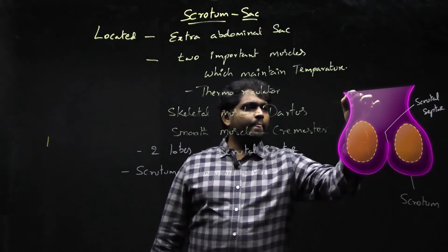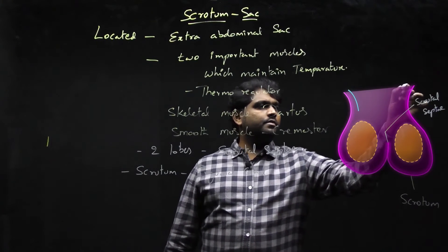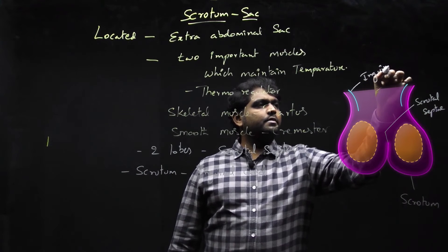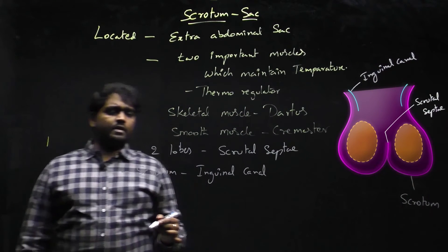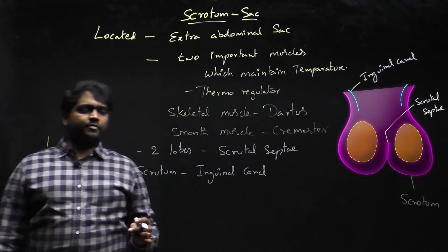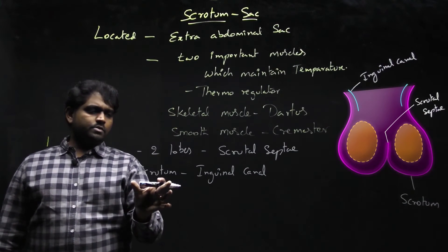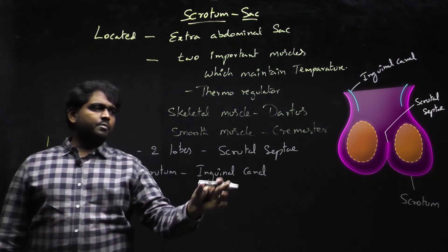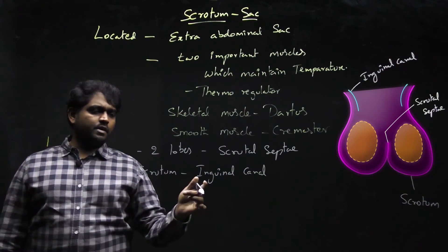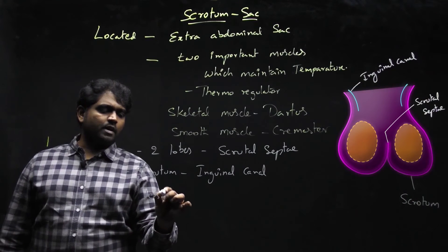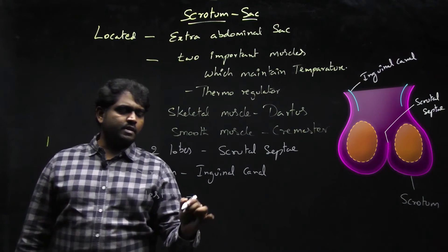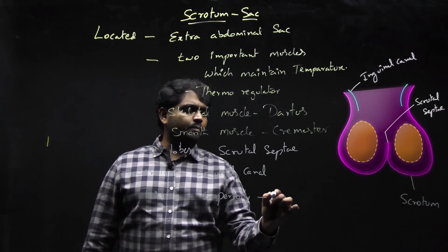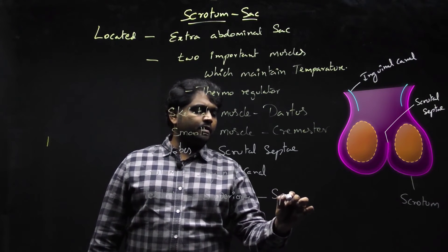This is the inguinal canal by which the scrotum is hanged. There is a very important differentiation: the scrotum is hanged by the inguinal canal, but the testes are located inside the scrotum. So how are the testes hanged? The testes are hanged superiorly by the help of the spermatic cord.